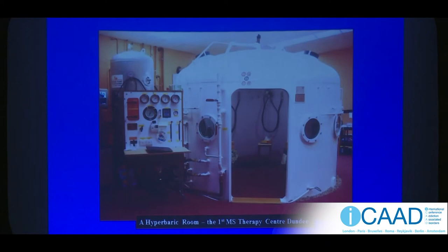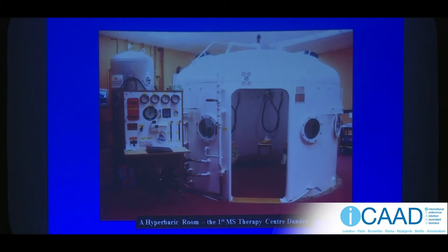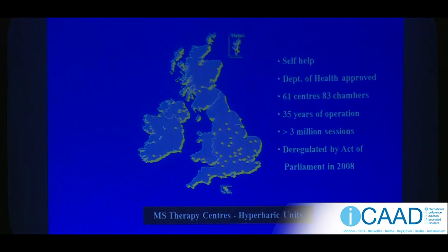We're dealing with an agent we know is essential to the brain, and we now know oxygen controls inflammation. We have every reason to suspect patients should have a little more oxygen. In 1982, the five patients I was involved with decided to continue, and we founded a charity centre — run by patients for patients — in the face of determined opposition from my profession. We now have a Department of Health-approved treatment with 61 centres operating 83 chambers, having been in operation 35 years, completing over 3 million sessions without a single serious incident.